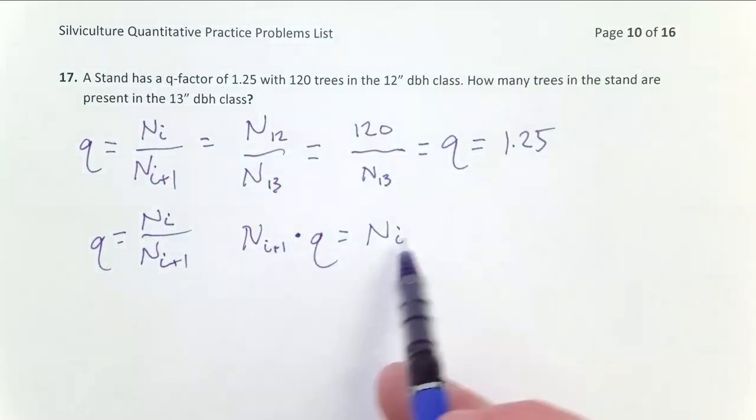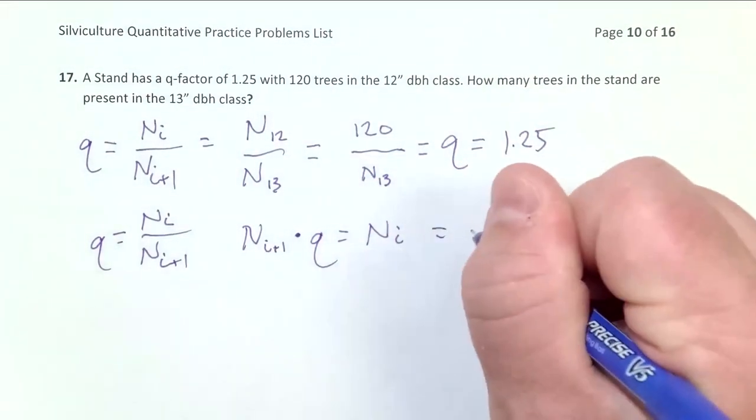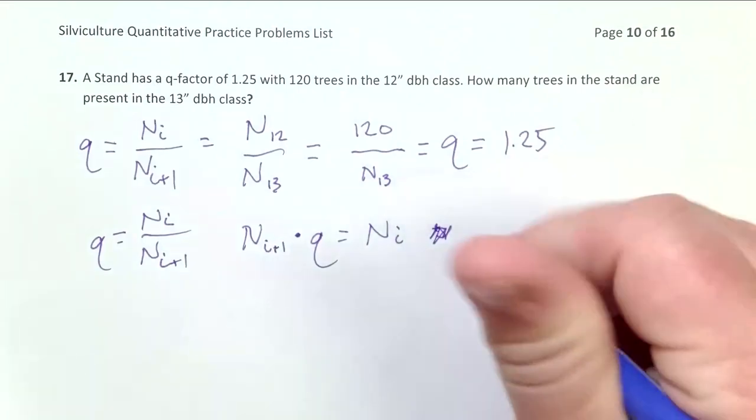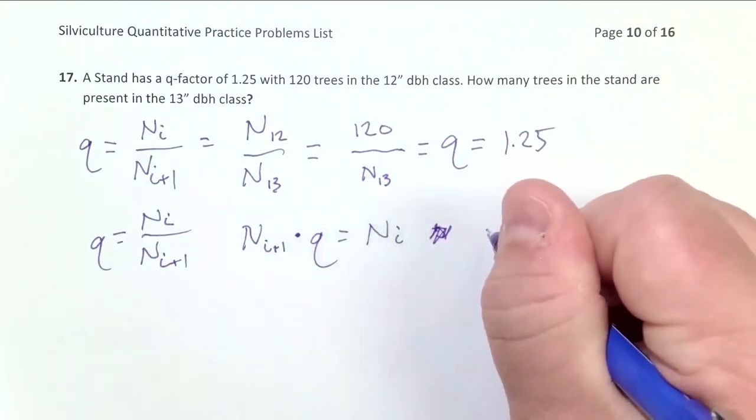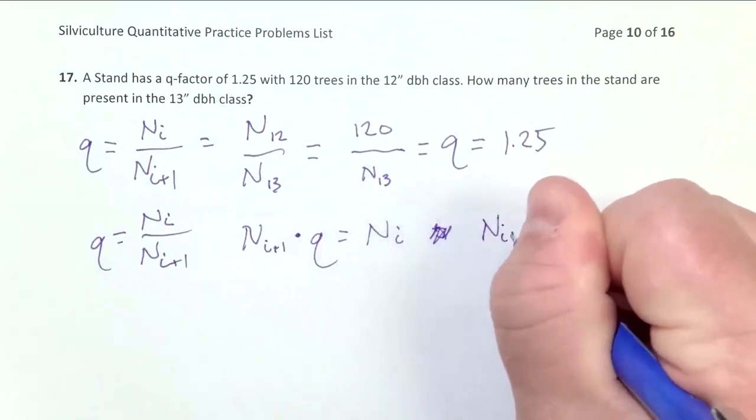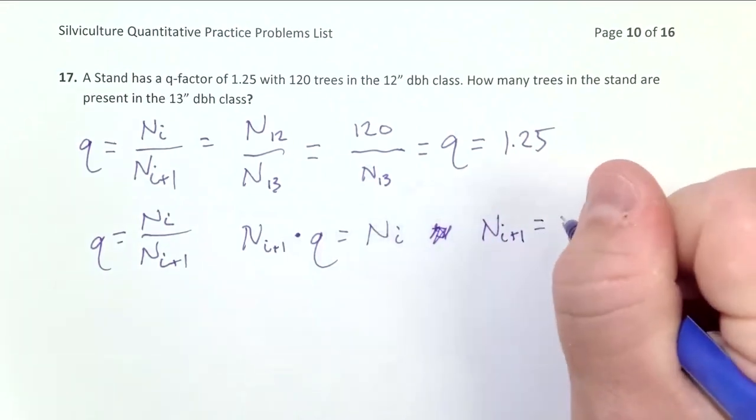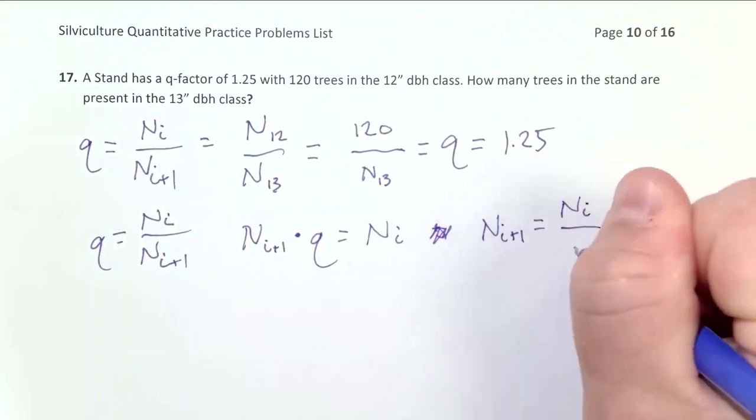I'm trying to solve for this factor, so I'm going to divide both sides by Q. So I get N sub I plus 1 equals N sub I divided by Q.